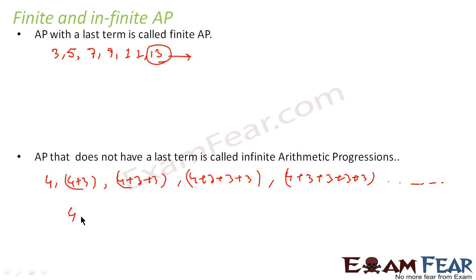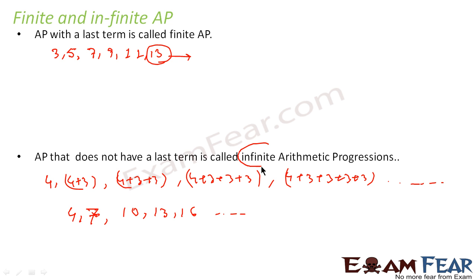So the AP is nothing but 4, 7, 10, 13, 16, dot dot dot. If you see this AP, there is no last term because it is an infinite AP. So APs are of two types: finite AP and infinite AP. An AP which has a last term is called finite AP; an AP which does not have a last term is called infinite AP.